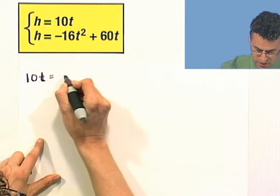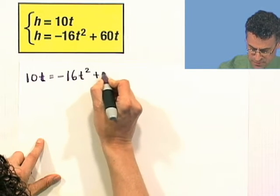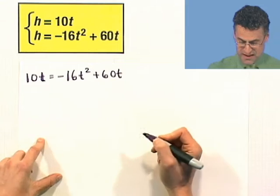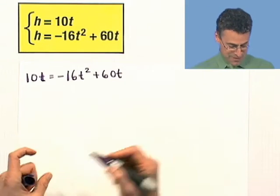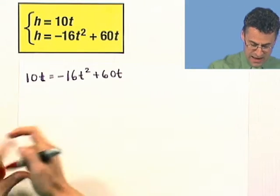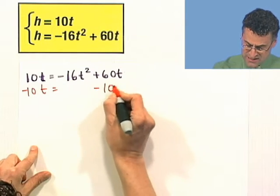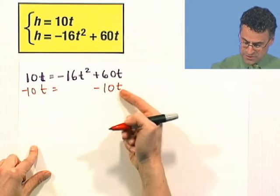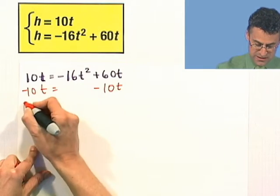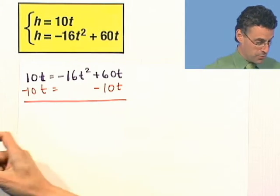10t equals negative 16t squared plus 60t. And of course, it's a quadratic. So I want to subtract 10t from both sides. And notice how nicely I always align up like terms, not under the t squares, but under the t's. That is the Ed Berger way.